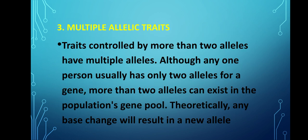The third is multiple allelic traits — traits controlled by more than two alleles, also called multiple alleles. Although any one person usually has only two alleles for a gene, more than two alleles can exist in the population gene pool. Theoretically, any base change will result in a new allele.